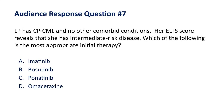Audience response question for CML patient Kate, a 42-year-old with newly diagnosed chronic phase CML and intermediate UDOS long-term survival score: which is the most appropriate initial therapy? A) imatinib, B) bosutinib, C) ponatinib, or D) omacetaxine? The most appropriate answer is B, bosutinib. Her intermediate risk score means imatinib is not the preferred first-line choice, and ponatinib and omacetaxine are used in relapsed and refractory settings. Bosutinib is a second-generation BCR-ABL TKI appropriate for intermediate-risk disease.